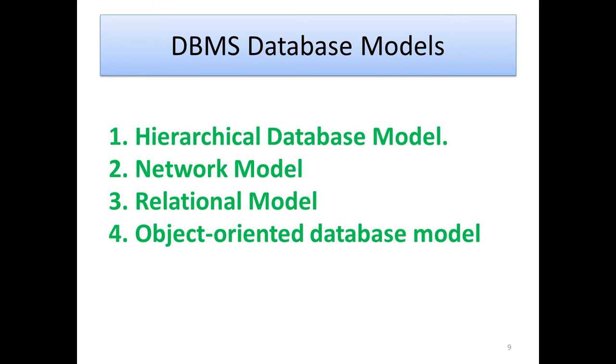DBMS database model. It should be classified as four types. First, hierarchical database model. Second one, network model. Third one, relational model. Fourth one, object oriented database model.